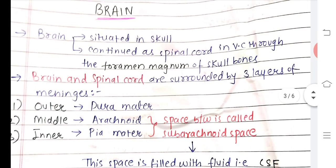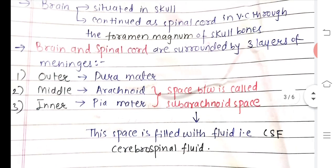The brain is situated in the skull and continues into the spinal cord via the vertebral column. The brain is continued as spinal cord in the vertebral column via the foramen magnum of the skull bones.